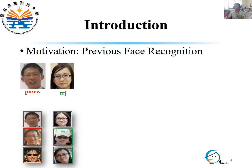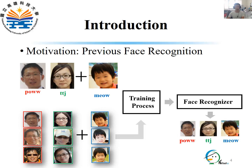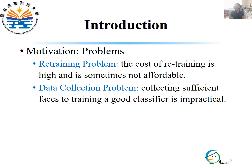Two years ago, our family had a new member — my daughter Miao. In order to recognize all members, we have to collect and add Miao's faces to the dataset, then retrain the model to make it able to recognize me, my wife, and my daughter. Accordingly, previous recognition methods generally suffer two problems: first, the cost of retraining is high and sometimes not affordable, especially when the number of persons to be recognized is large. Second, collecting sufficient faces to train a good classifier is impractical in some applications.